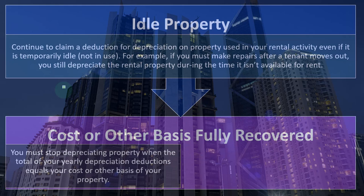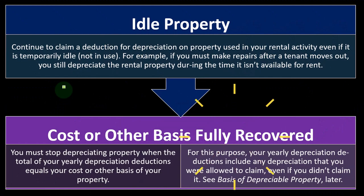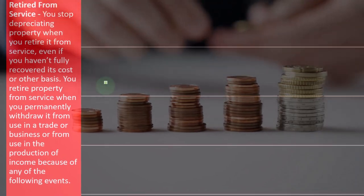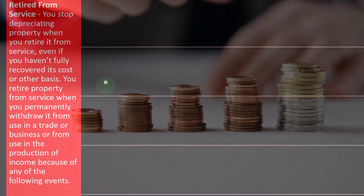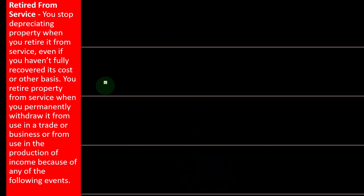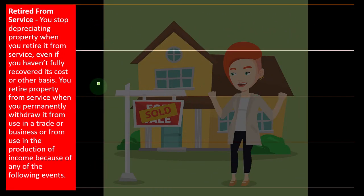Does that mean the building is no longer in use? No, because depreciation is just an estimate — an allocation of cost over an estimated useful life. Your yearly depreciation deductions include any depreciation you were allowed to claim, even if you didn't claim it. Regarding retired from service: you stop depreciating property when you retire it from service — typically by selling it or converting it to personal use. You stop depreciating even if you have fully recovered its cost, or even if you haven't fully recovered its cost or basis.